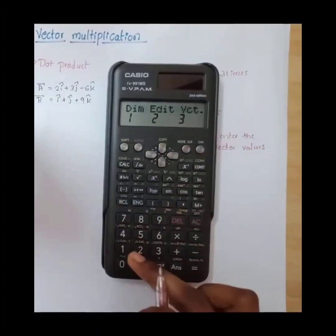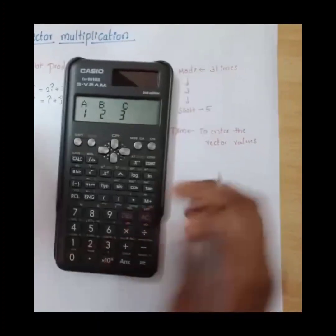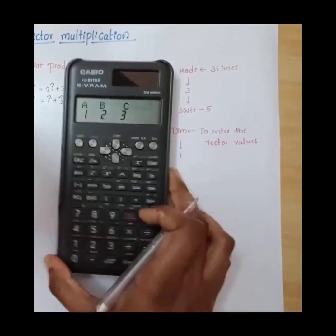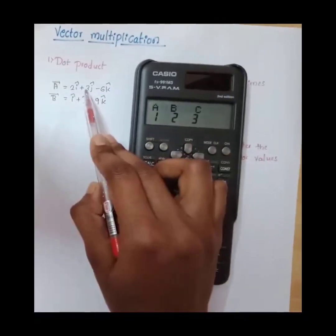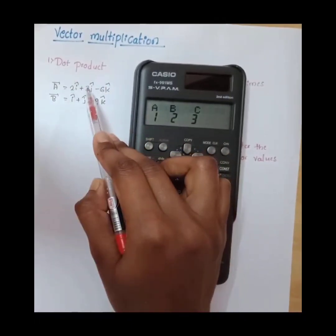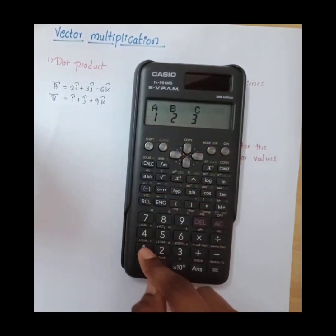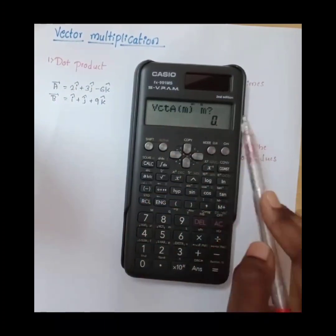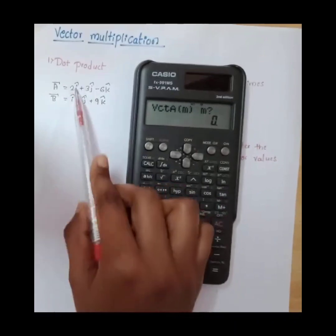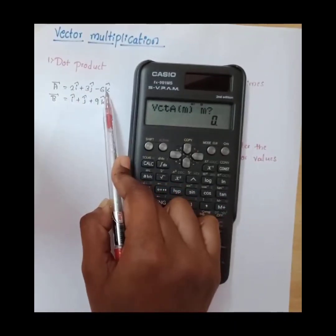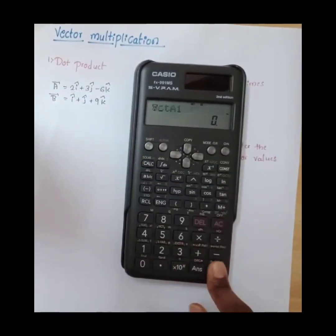So to choose dimension, press one. Here we have to enter the vector A values, so choose A. It is a three dimensional vector i, j, k, so press three equals.